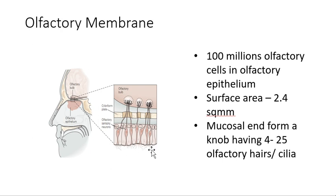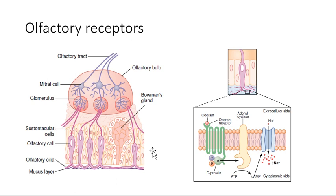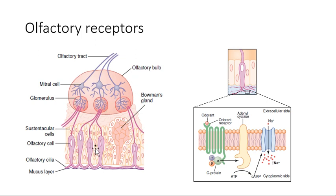The mucosal end forms a knob-like structure having various cilia, which are hair-like structures present below. These cilia-like structures are the olfactory receptors, basically having nerve endings. Here is the cribriform plate having different pores, so they cross through those pores. Within the olfactory bulb, these nerve endings — the olfactory receptors — and then olfactory cells having nerve endings go to synapse on other bipolar cells, which are mitral cells.